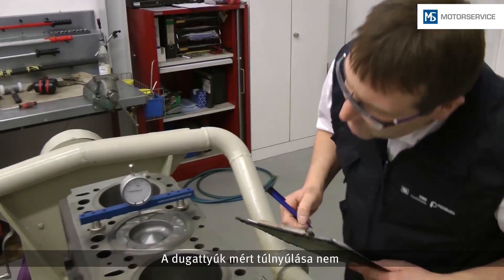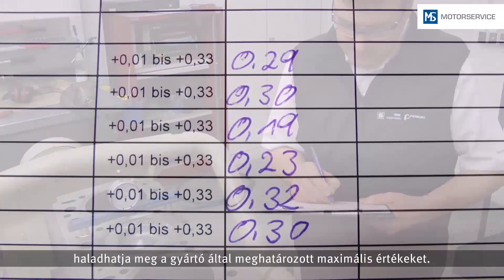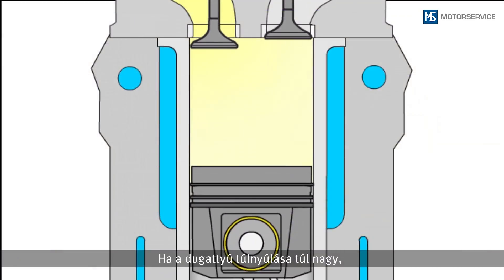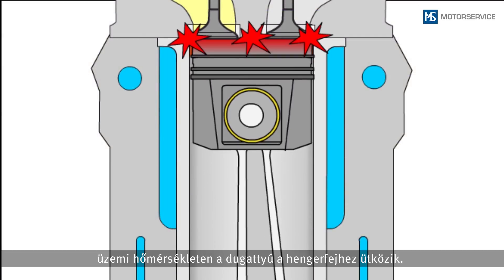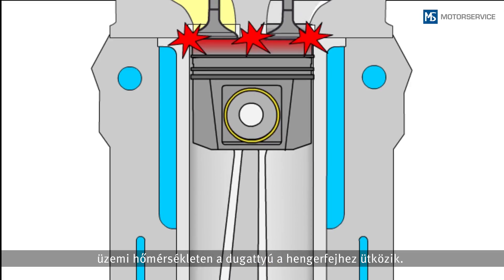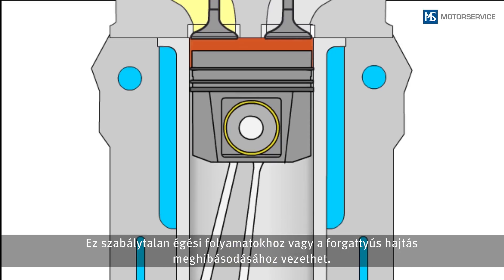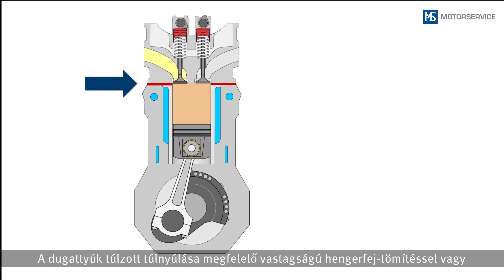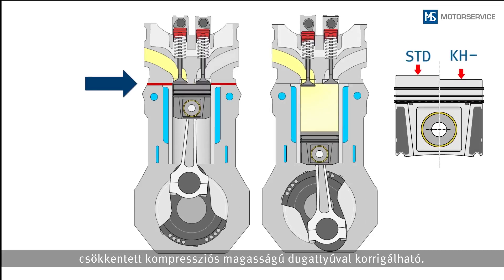The measured piston protrusions must not exceed the maximum values of the manufacturer's specifications. If the piston protrusion is too large, the piston bumps against the cylinder head once it has reached operating temperature. This results in combustion errors and damage to the crank mechanism.